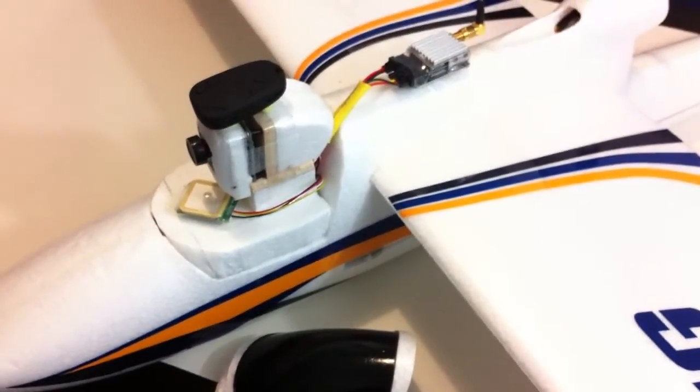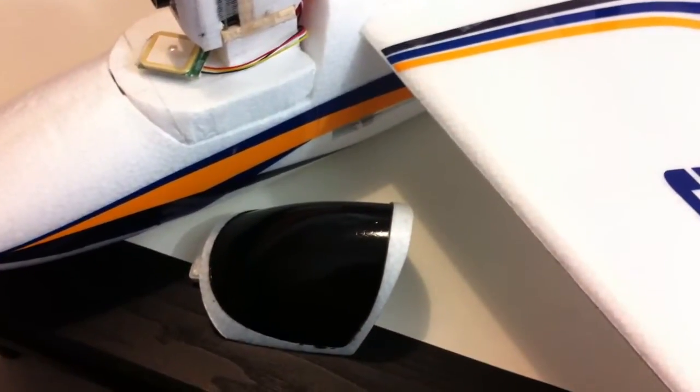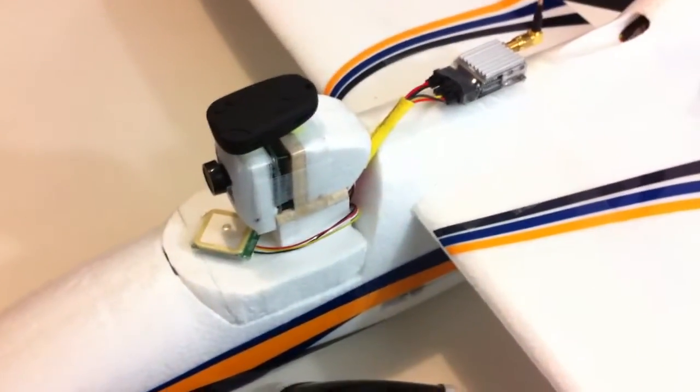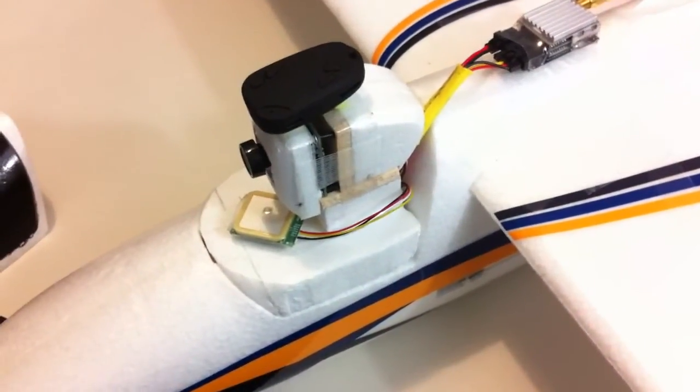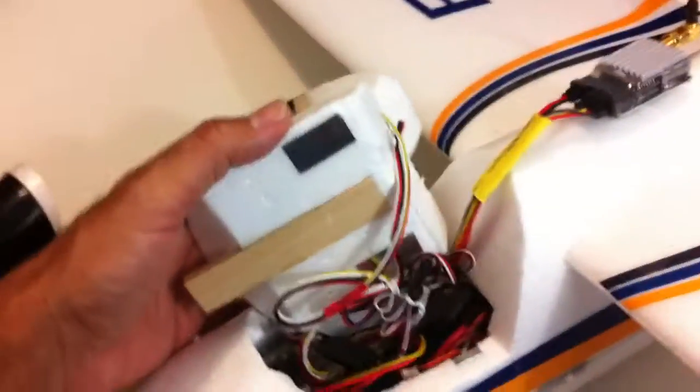So this is the basic setup we have on the Bixler. That's the original canopy and what we've done is replaced it with this one here which is just basically a bit of foam that we cut out with a hot wire cutter.